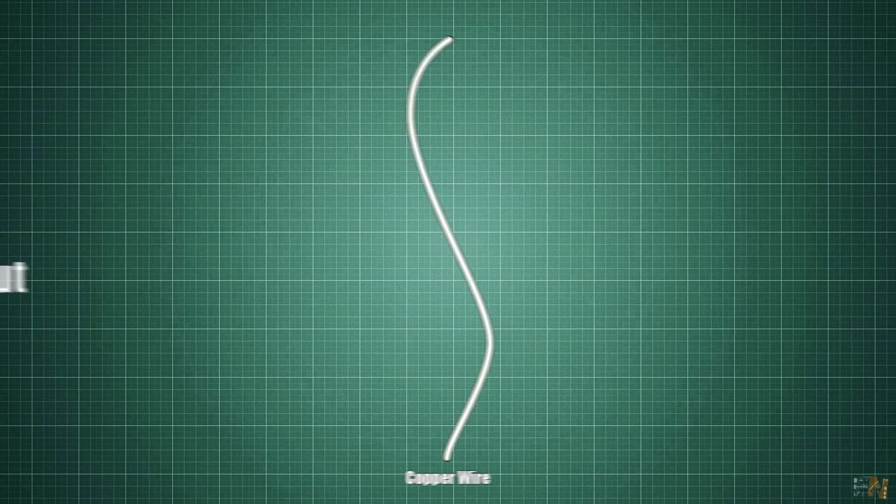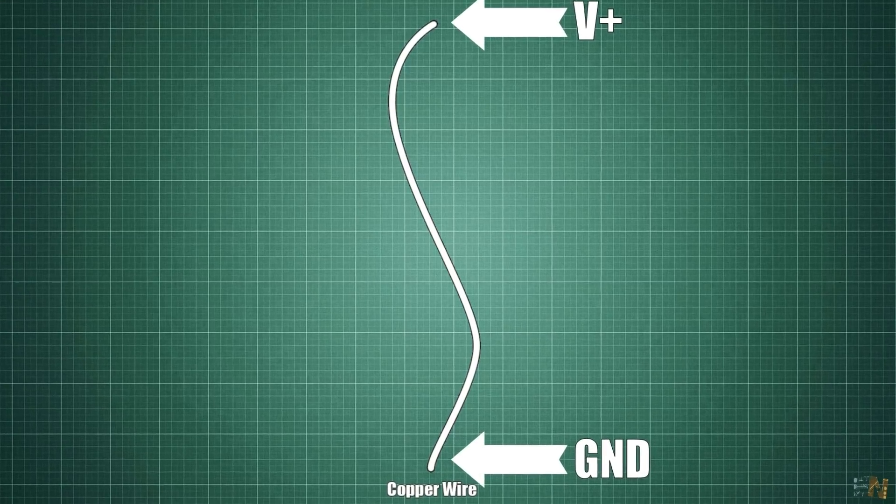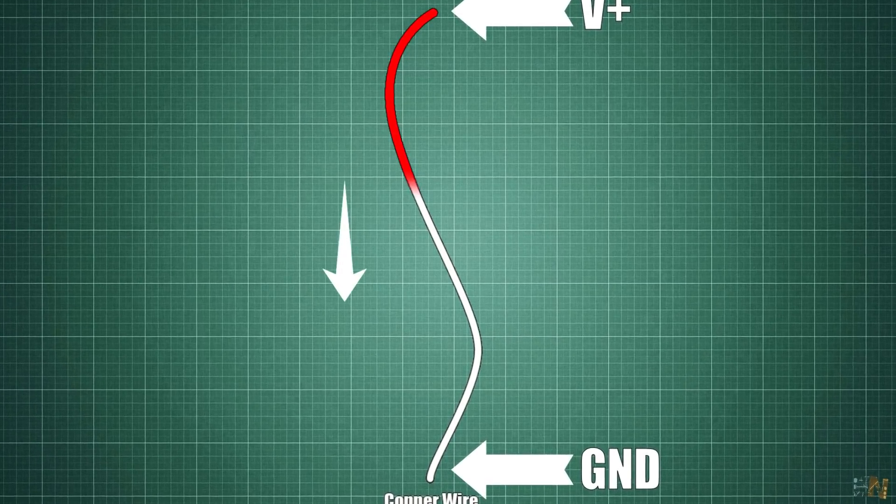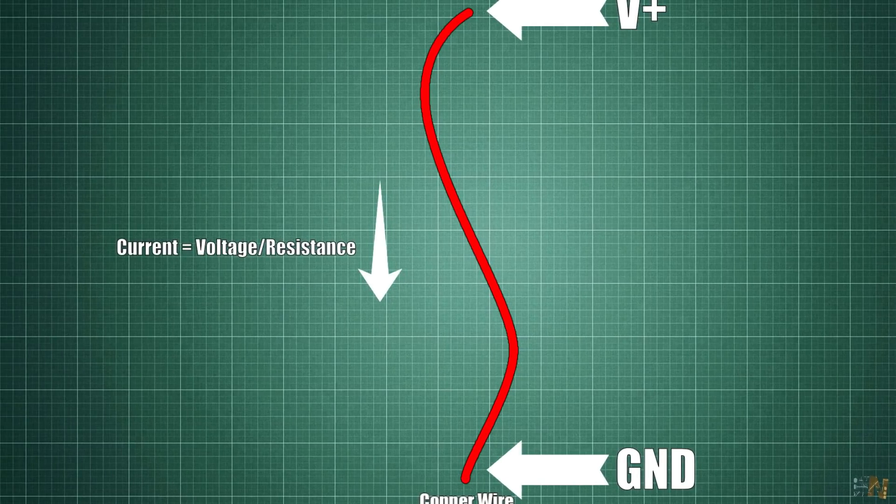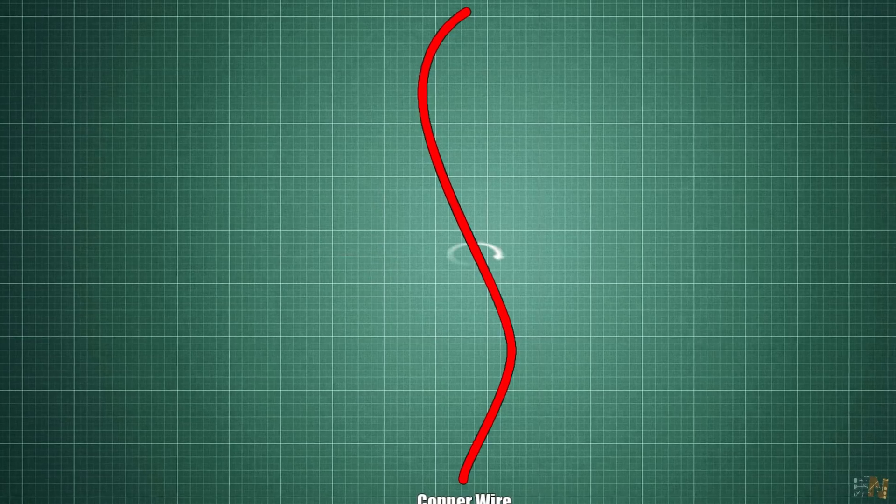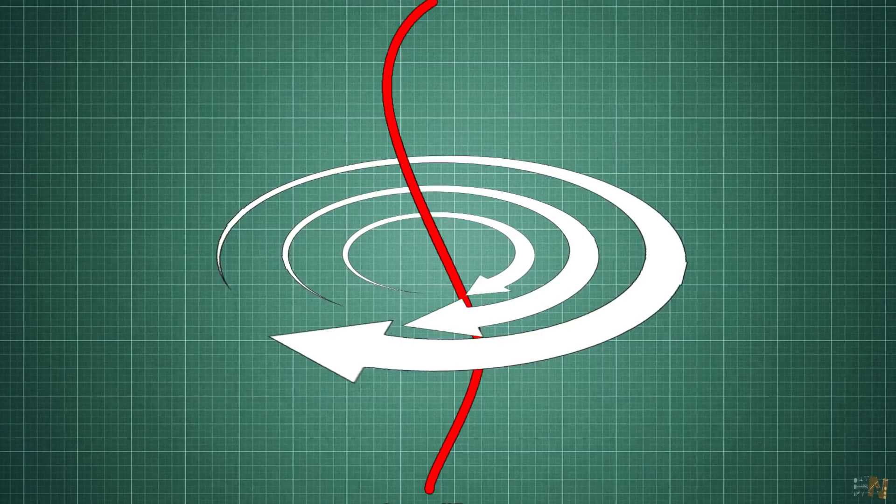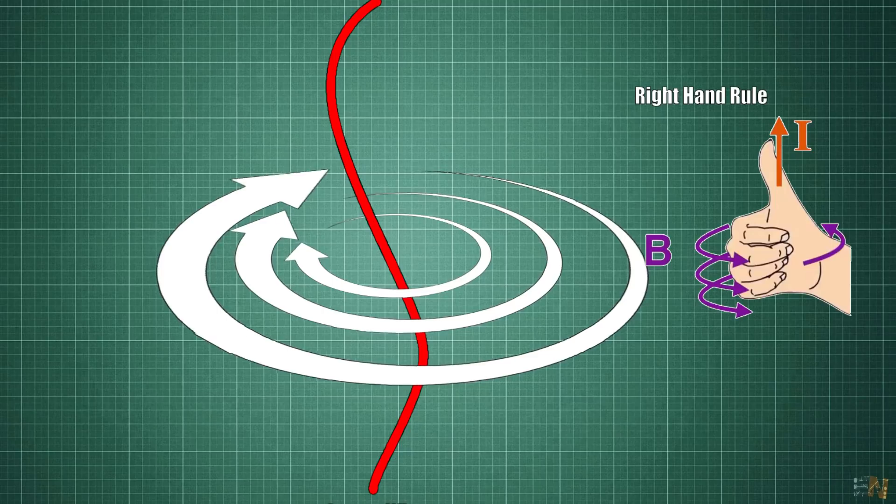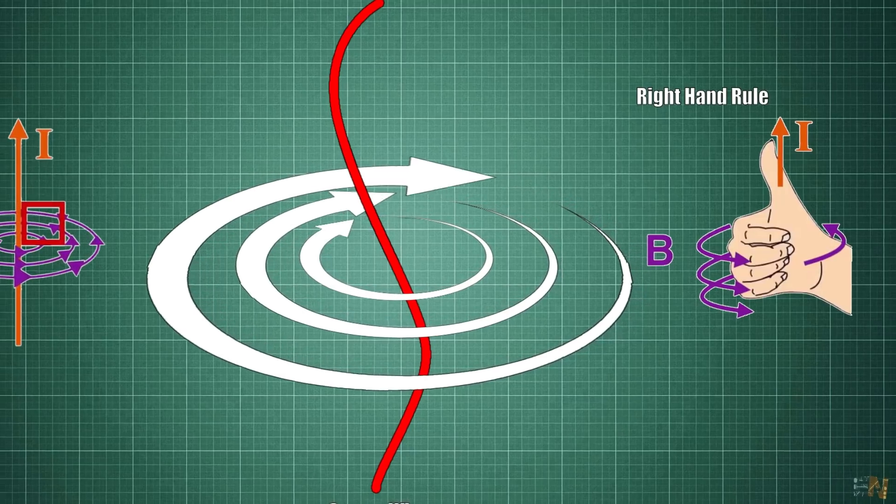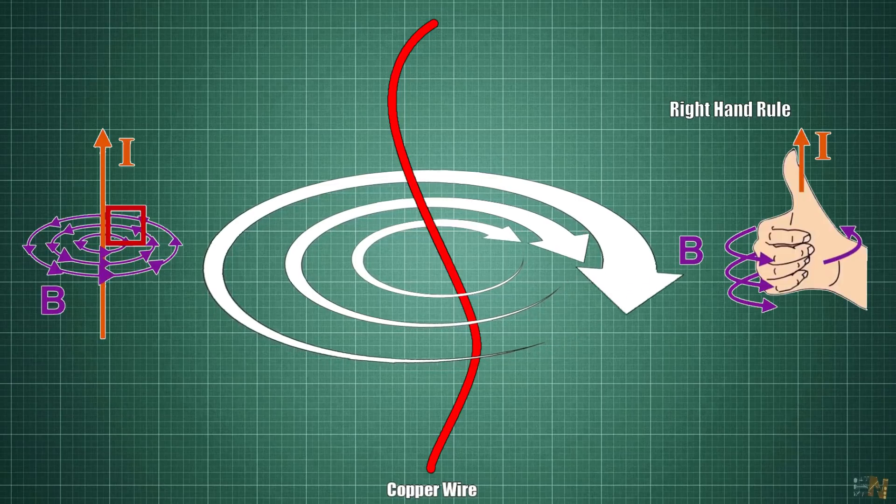Let's start with a simple copper wire. When we apply voltage at the ends of the copper wire, current will pass through that wire and the current value is depending on the applied voltage and the wire resistance. When current passes through a conductor such as this copper wire, a magnetic field is produced around the wire. We can note the direction of this magnetic field with the rule of the right hand. The thumb marks the direction of the current and the other fingers the direction of the created magnetic field around the wire.